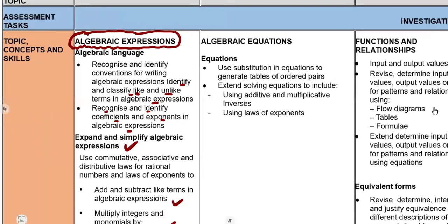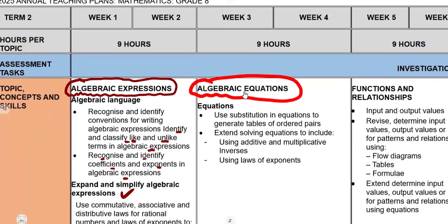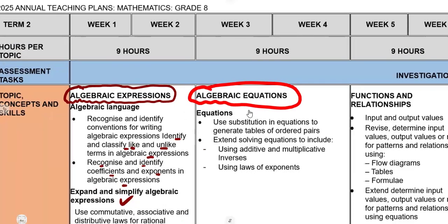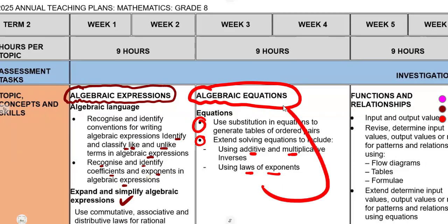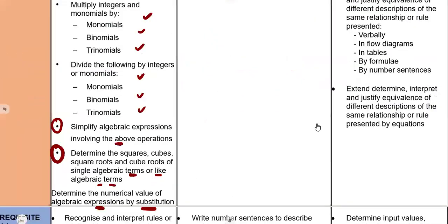After that, you must work with your algebraic equations. On your equations, use substitution in equations to generate tables of ordered pairs. Extend solving equations to include using additive and multiplicative inverses, and using laws of exponents. We see exponents here — we had them in algebraic expressions and we are having them in equations as well. They are very important, so make sure that you understand every part. That is your algebraic equations done.